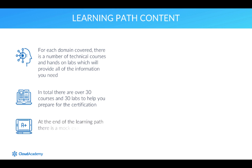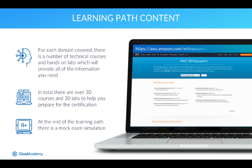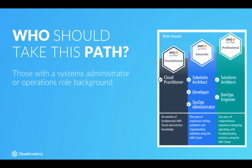At the end of the learning path there is a mock exam simulation to highlight any weak areas that may need further attention and study. I recommend you review some of the AWS white papers when you have completed your learning path to help solidify your understanding of the services, features and methodologies. This is one of the three associate level certifications available with AWS and it's guided to those with a systems administrator or operations role background.